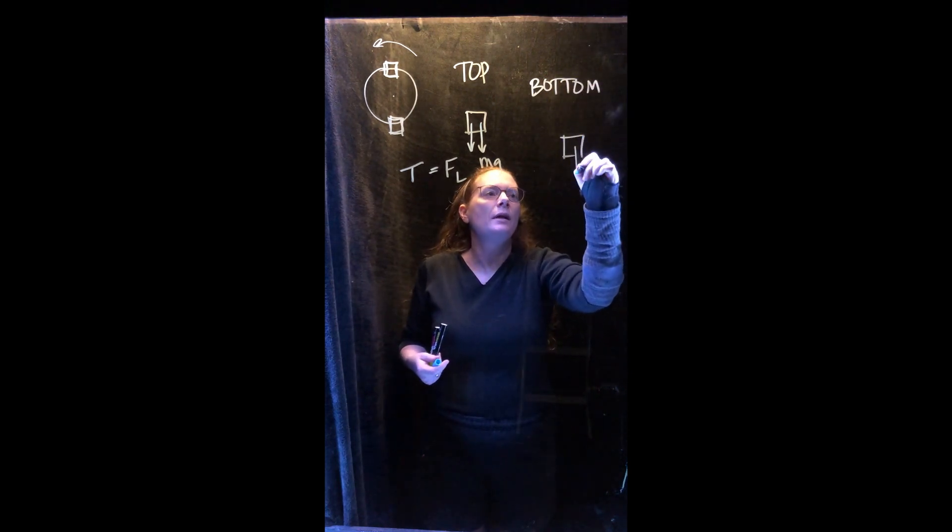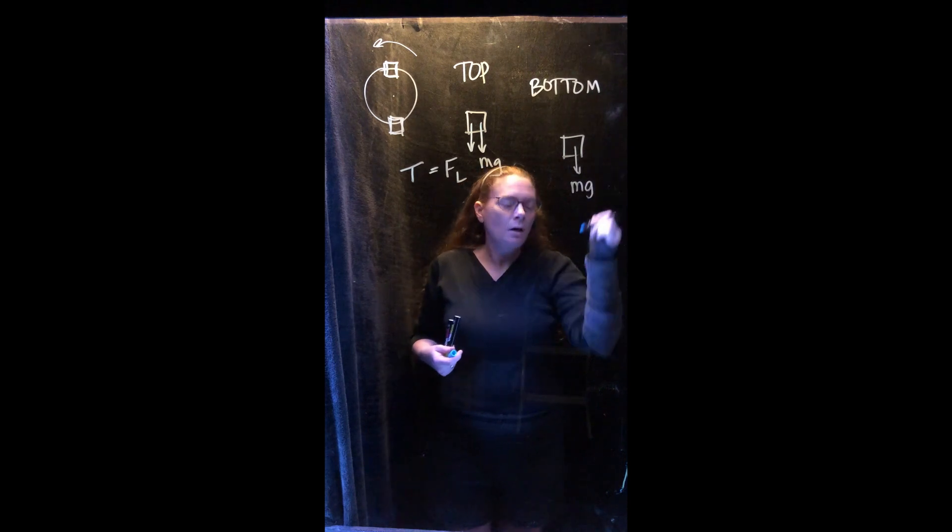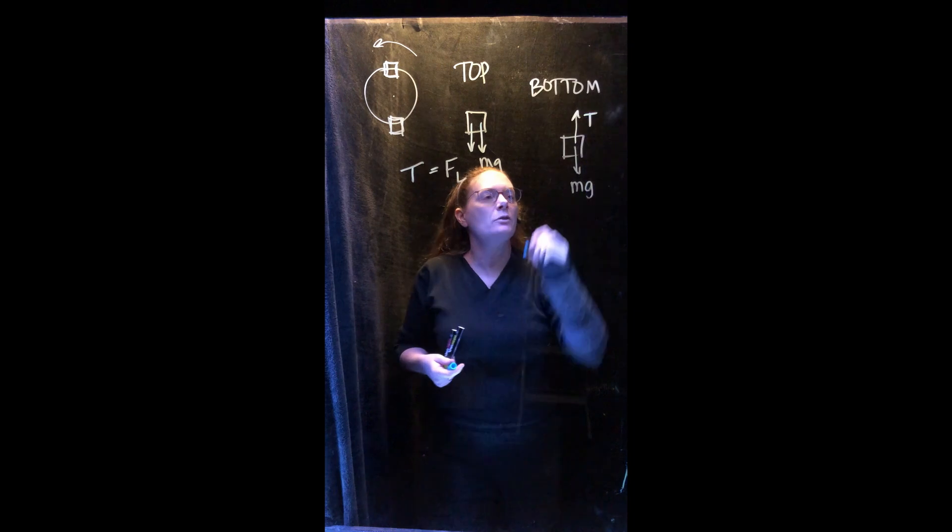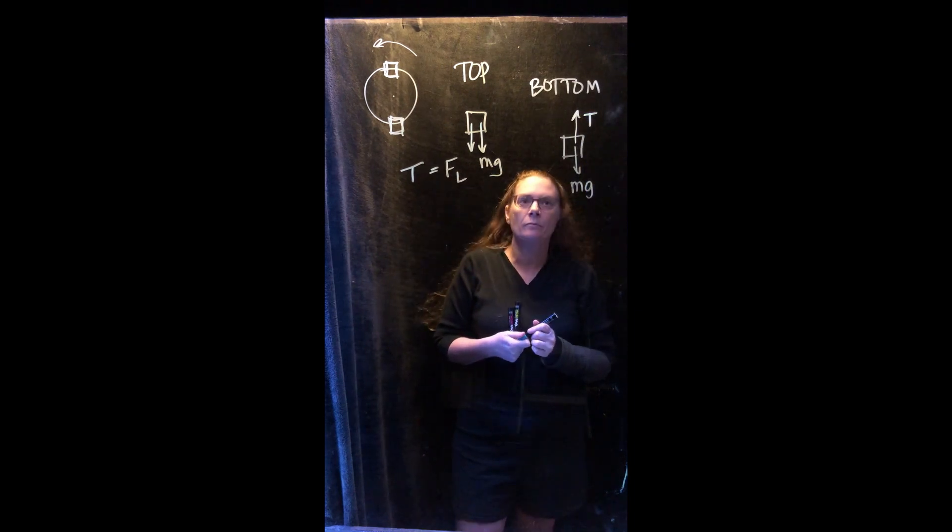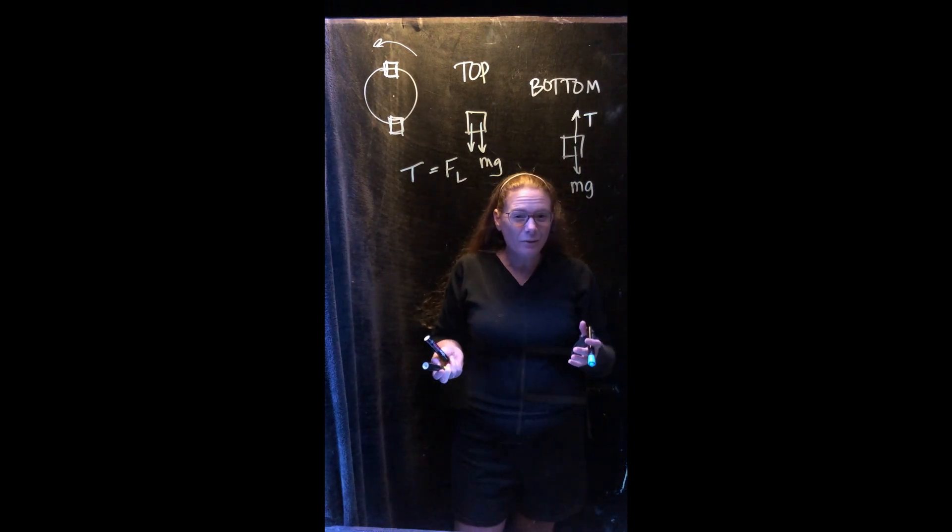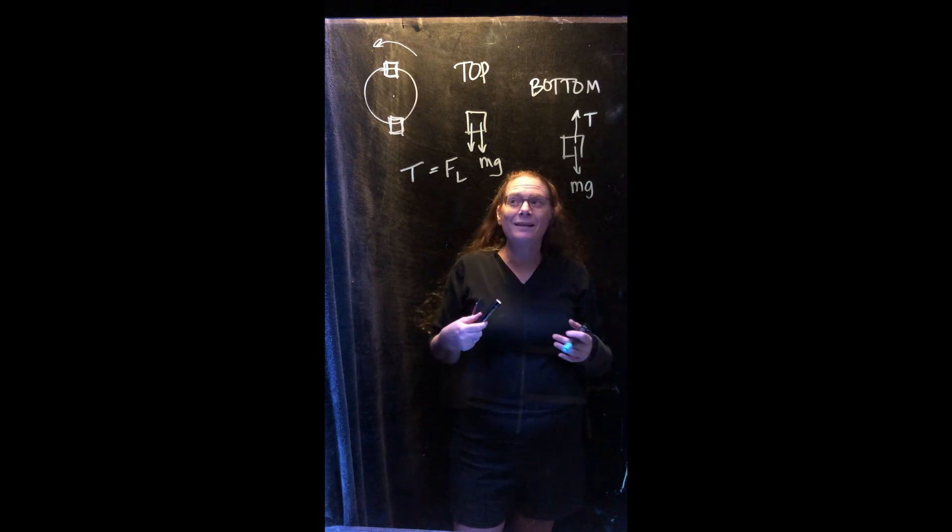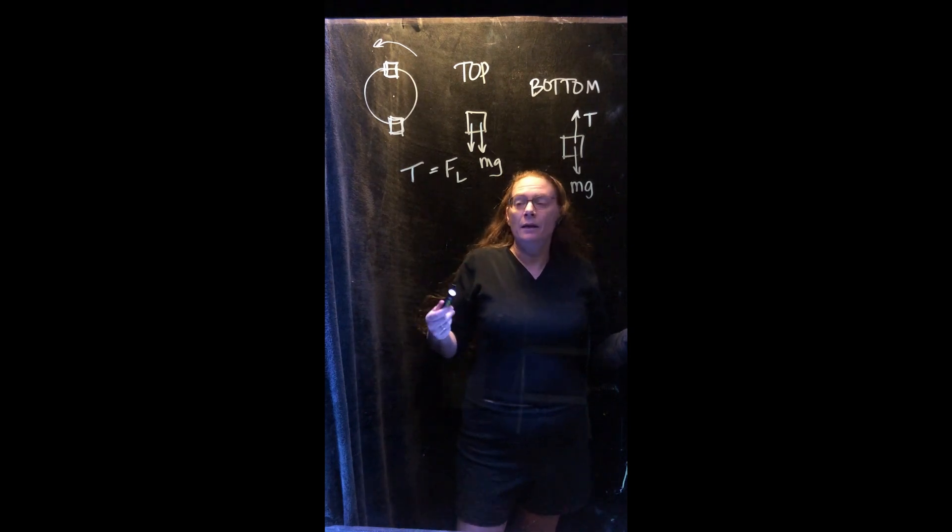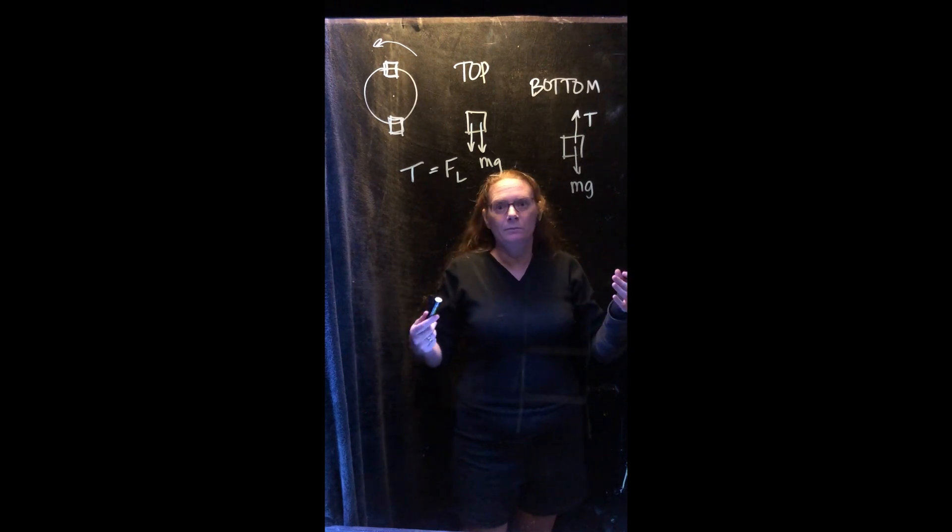At the bottom, what do we have? Well, we still have the earth pulling down. When we're at the bottom of the circle, what direction is the lanyard pulling? So my tension is pulling up. In that case, is there anything else interacting with the fob? No, there's nothing keeping it going in the circle except inertia.